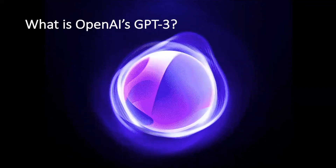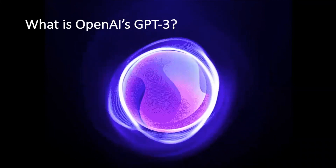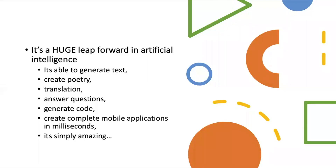So what is OpenAI's GPT-3? Well, first off it's a huge leap forward in artificial intelligence. Some of the things it can do: it's able to generate text, create poetry, translation, answer questions, generate code, and create complete mobile applications in milliseconds. It's absolutely amazing in terms of capabilities.